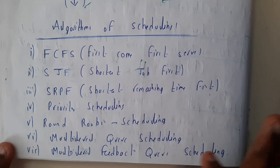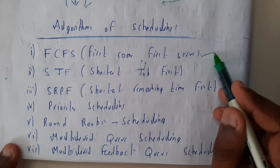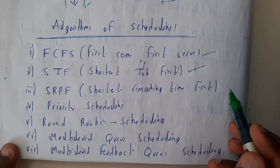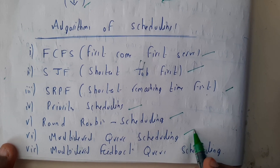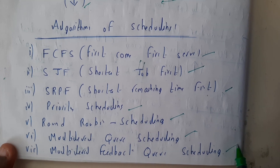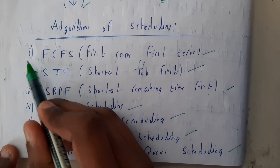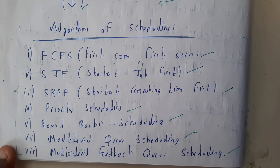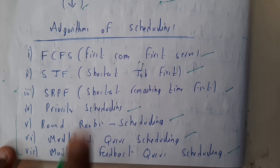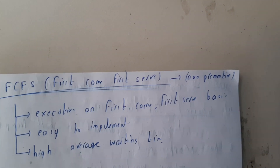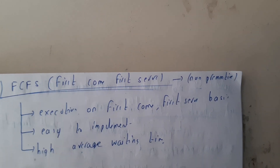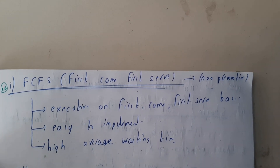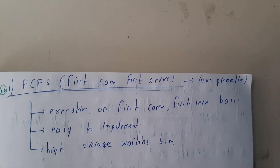In terms of scheduling algorithms, there are seven types: First Come First Serve, Shortest Job First, Shortest Remaining Time First, Priority Scheduler, Round Robin Scheduler, Multi-Level Queue Scheduler, and Multi-Level Feedback Queue Scheduler. In the next seven tutorials, we'll cover each of these with examples. We'll start with FCFS — First Come First Serve — in the next tutorial. Thank you for watching!